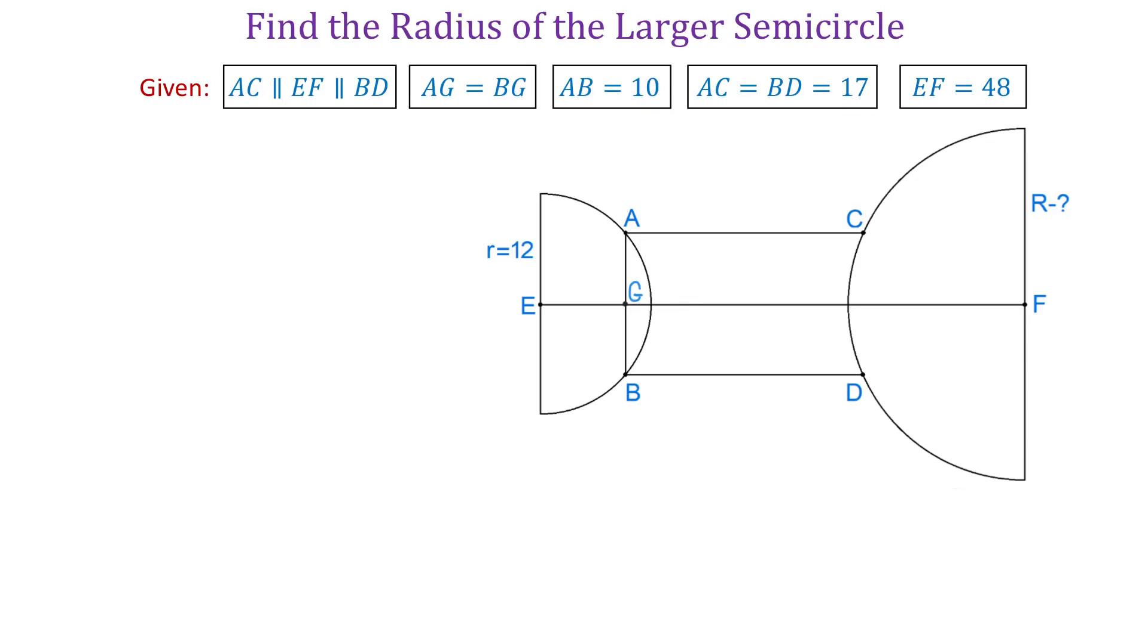Hello, in this figure we have two semicircles and the radius of the smaller one is 12 units. Points A, B, C and D are on the semicircles and the line segments AC, EF and BD are parallel. The points E and F are the centers of the circles.